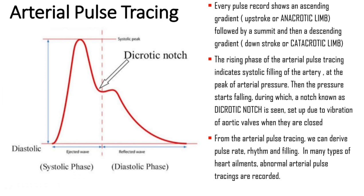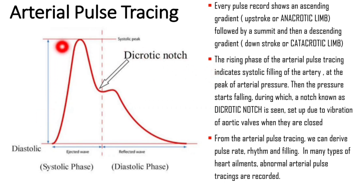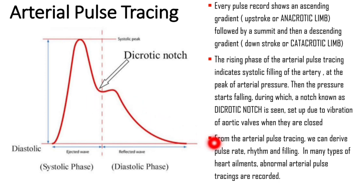Every pulse record shows an ascending gradient, upstroke or anacrotic limb, followed by a summit, and then a descending gradient, or catacrotic limb. The rising phase of the arterial pulse tracing indicates systolic filling of the artery at the peak of arterial pressure. Then the pressure starts falling, during which a notch known as the dicrotic notch is seen, set up due to the vibration of aortic valves when they are closed. From the arterial pulse tracing, we can derive pulse rate, rhythm, and filling. In many types of heart diseases, abnormal arterial pulse tracings are recorded.